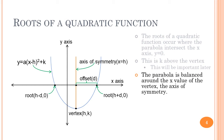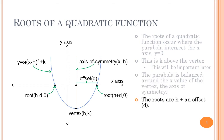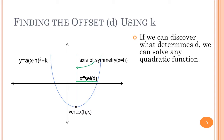The parabola is balanced around the x-value of the vertex, which is why we call it the axis of symmetry. You can see that the parabola is perfectly balanced around this axis. The roots are simply going to be at h plus or minus some offset, which we've labeled d. So the equation is simply x equals h plus or minus d. All we have to do now is find out what d depends on.